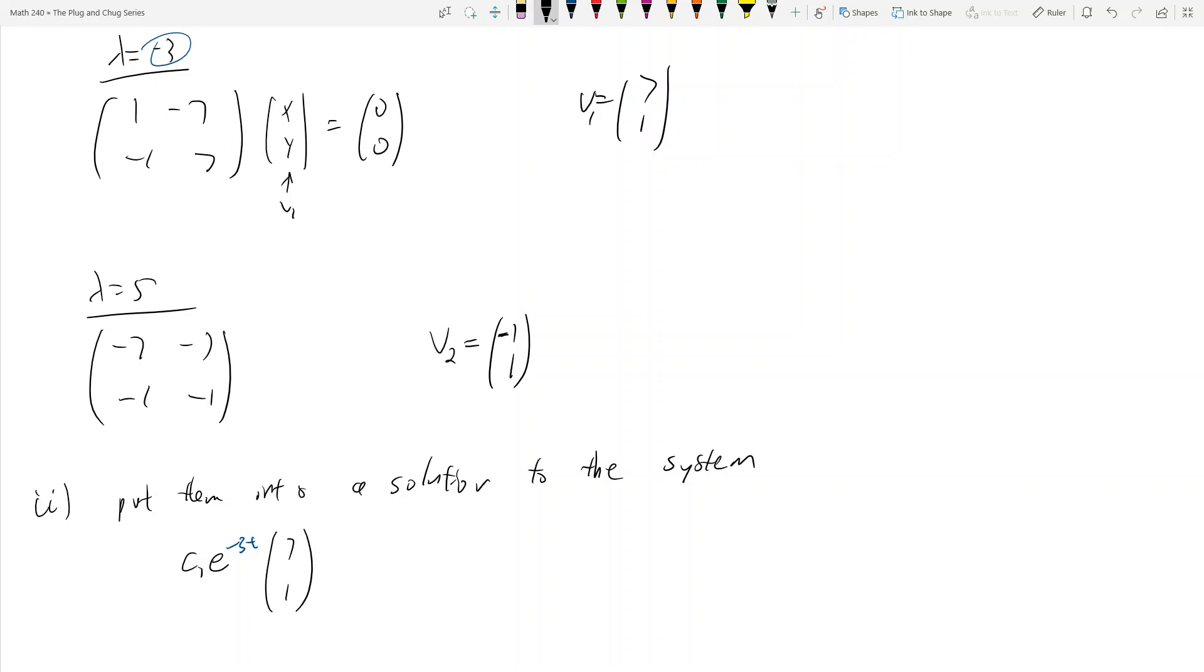Then I add c₂ times e^(5t), and then multiply it by the eigenvector corresponding to 5, which is (-1, 1). So this is what x is going to be. x equals this, and we're done.